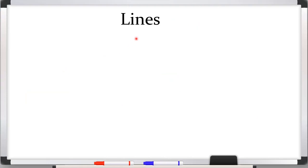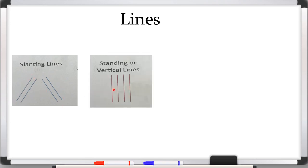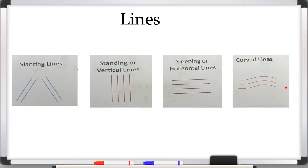Now lines. These are slanting lines. Then standing or vertical lines. Sleeping or horizontal lines. And these are curved lines.